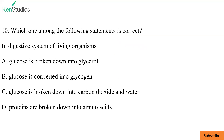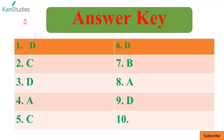Last question: which statement is correct about the digestive system of a living organism? Options are: glucose is broken down into glycerol; glucose is converted into glycosine; glucose is broken down into carbon dioxide and water; proteins are broken down into amino acids. You have to find the answer and reply in the comment box. I will reveal the answer in the next video — quiz number three. Answers for nine questions have been given today; find and reply with the 10th.